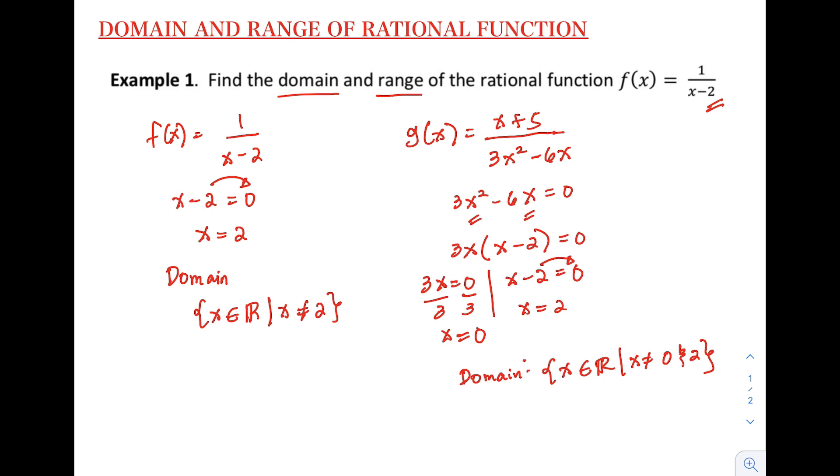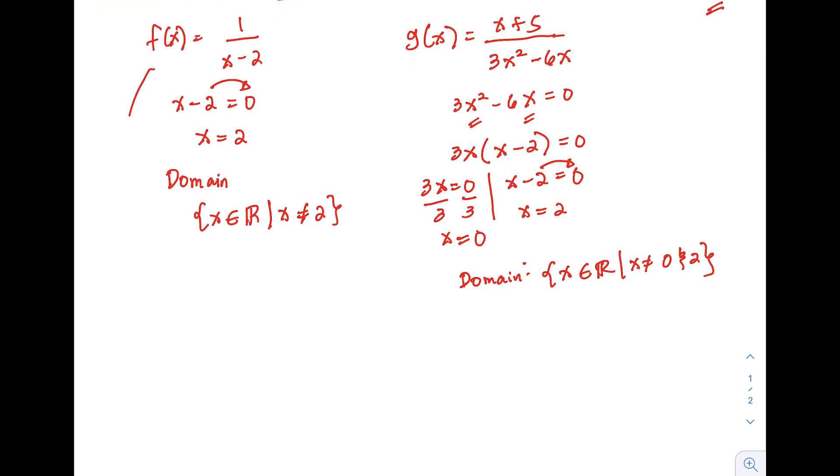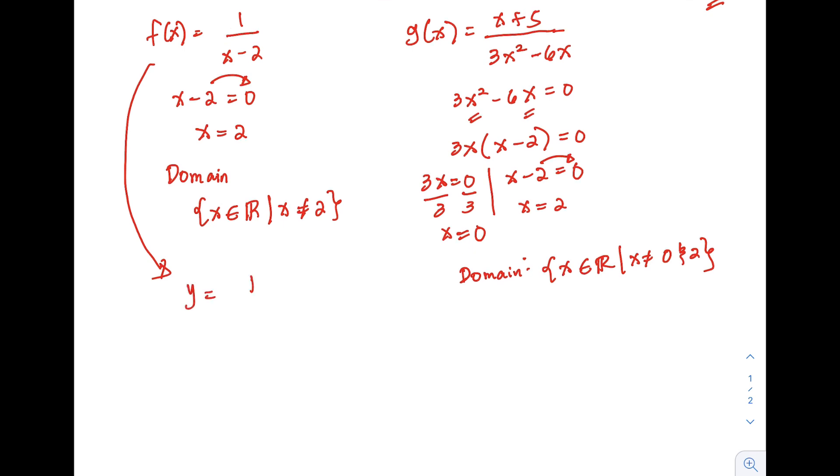So let's try. For example, this is our function. So replace f of x with y equals 1 over x minus 2. Then after doing that, solve for x in terms of y. So to do that, by cross multiplication, we know that when there's no denominator, that is understood as 1. So y times x minus 2 equals 1 times 1.